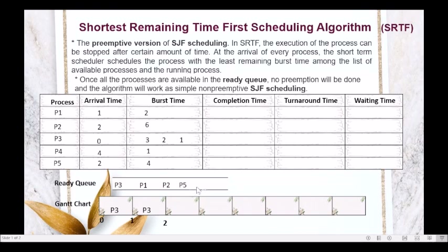We compare the burst times of all four processes: P3 has burst time 1, P1 has burst time 2, P2 has burst time 6, and P5 has burst time 4. P3 has the smallest burst time of 1, so we allocate the CPU still to P3. In the Gantt chart, P3 executes from 2 to 3.